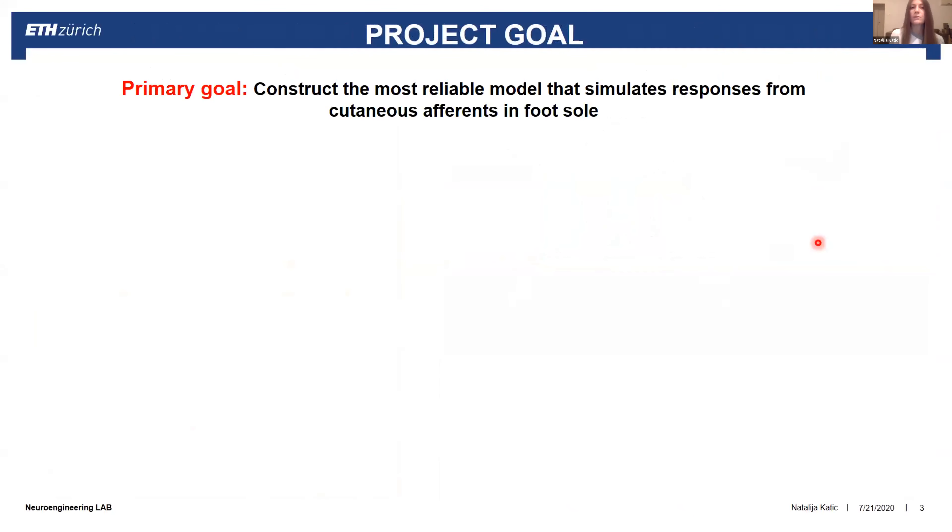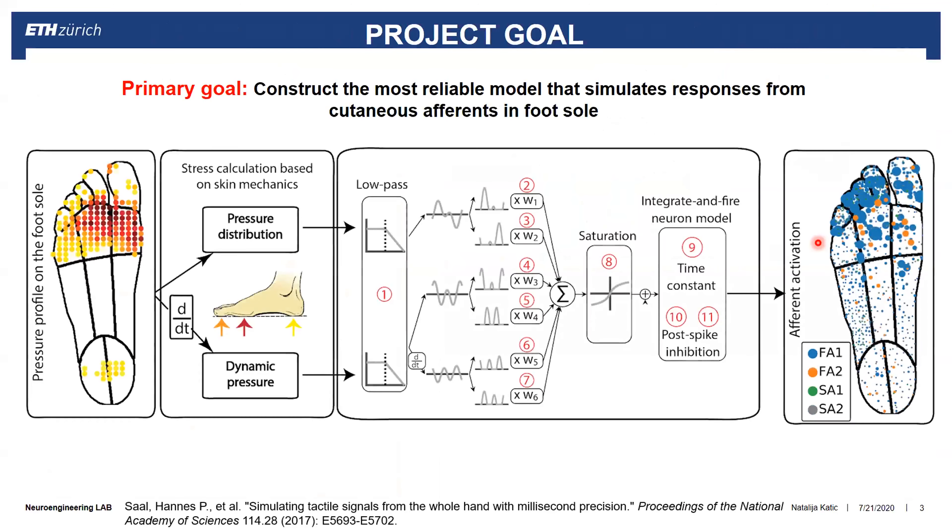Our main goal was to construct the most reliable model that simulates responses from cutaneous afferents in the foot sole. As an input, we have a pressure profile on the foot sole and based on specific characteristic skin mechanics, we are able to calculate the stress. We use that data with filtering and apply several functions in order to get the output of the model, which is which afferents are activated on which exact place and what is the value of their firing rates.